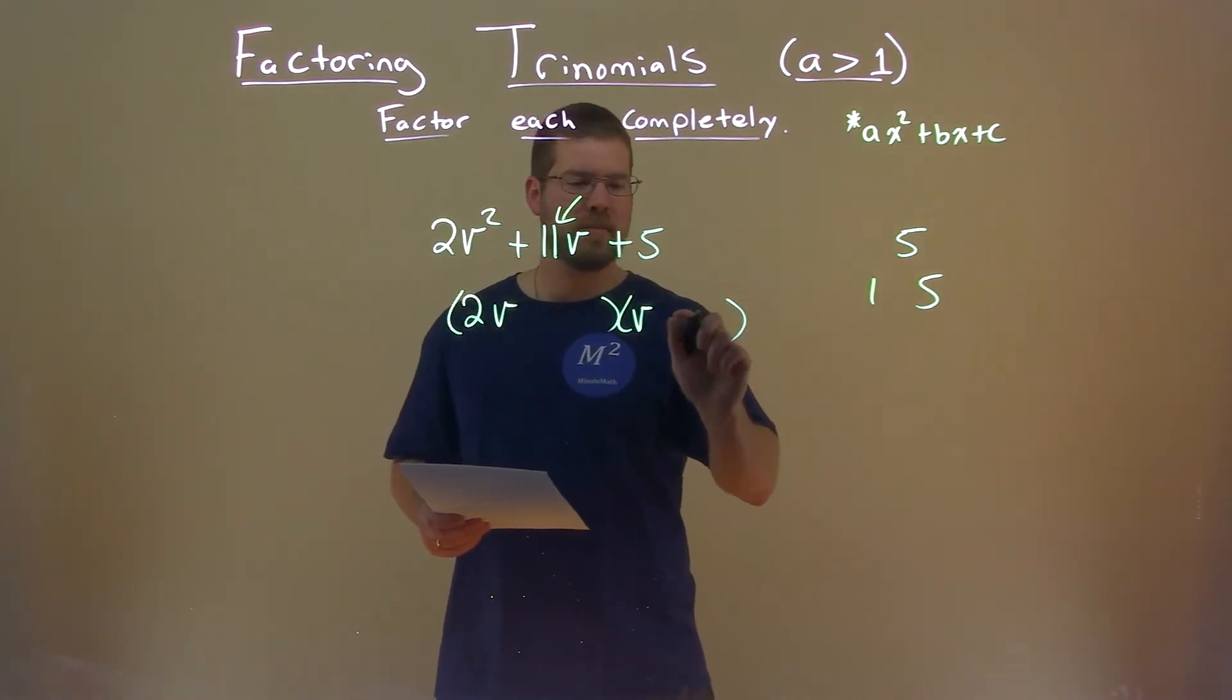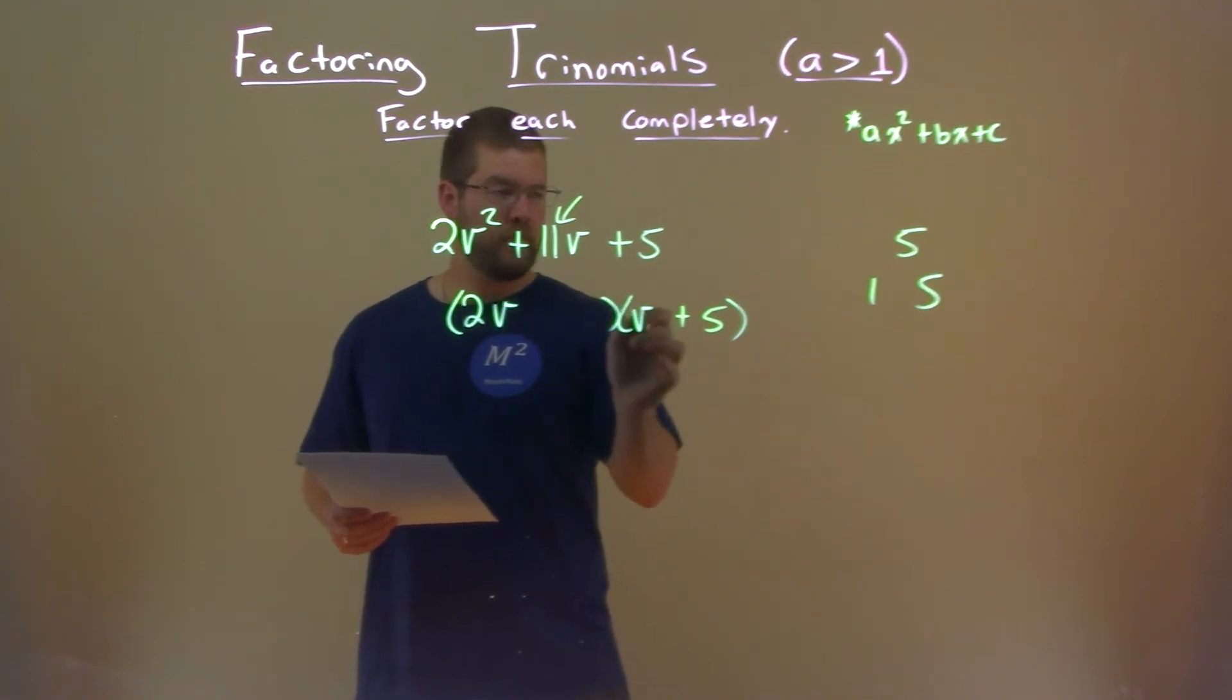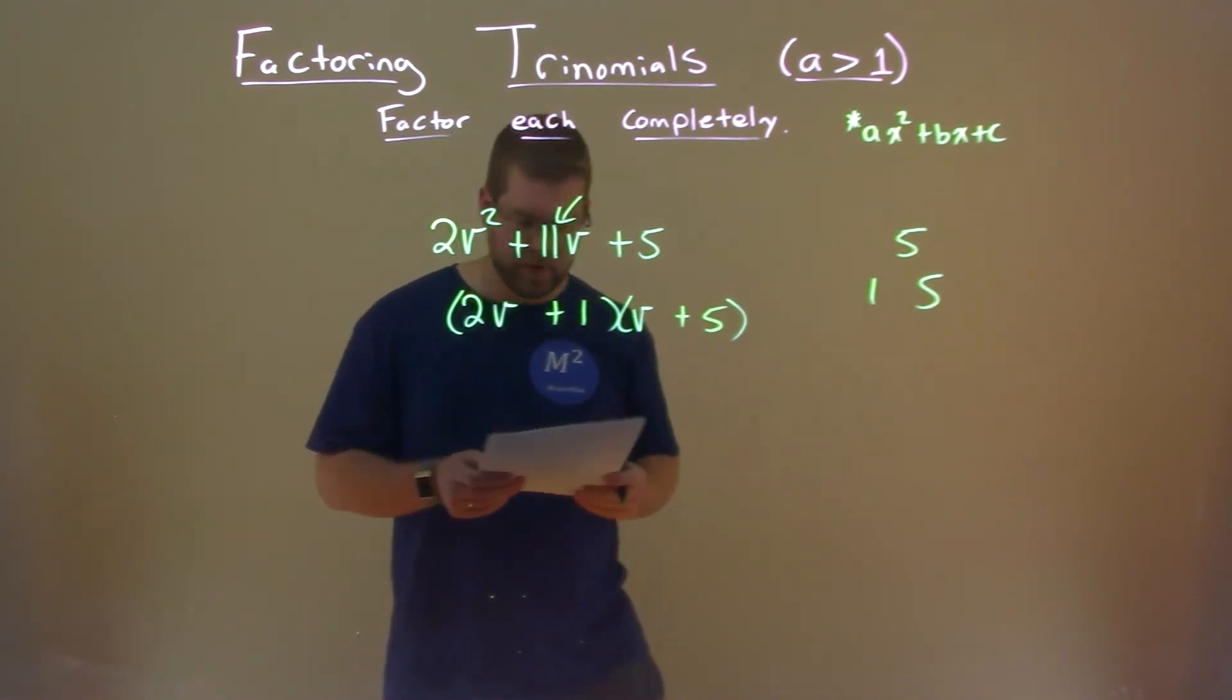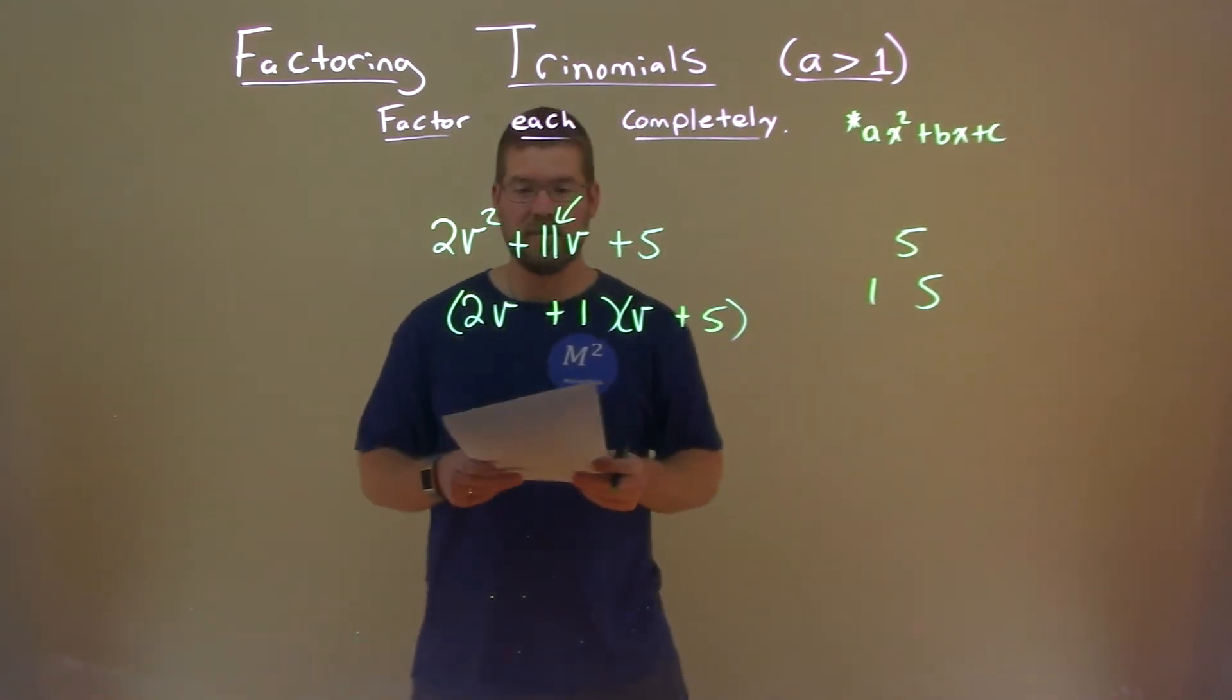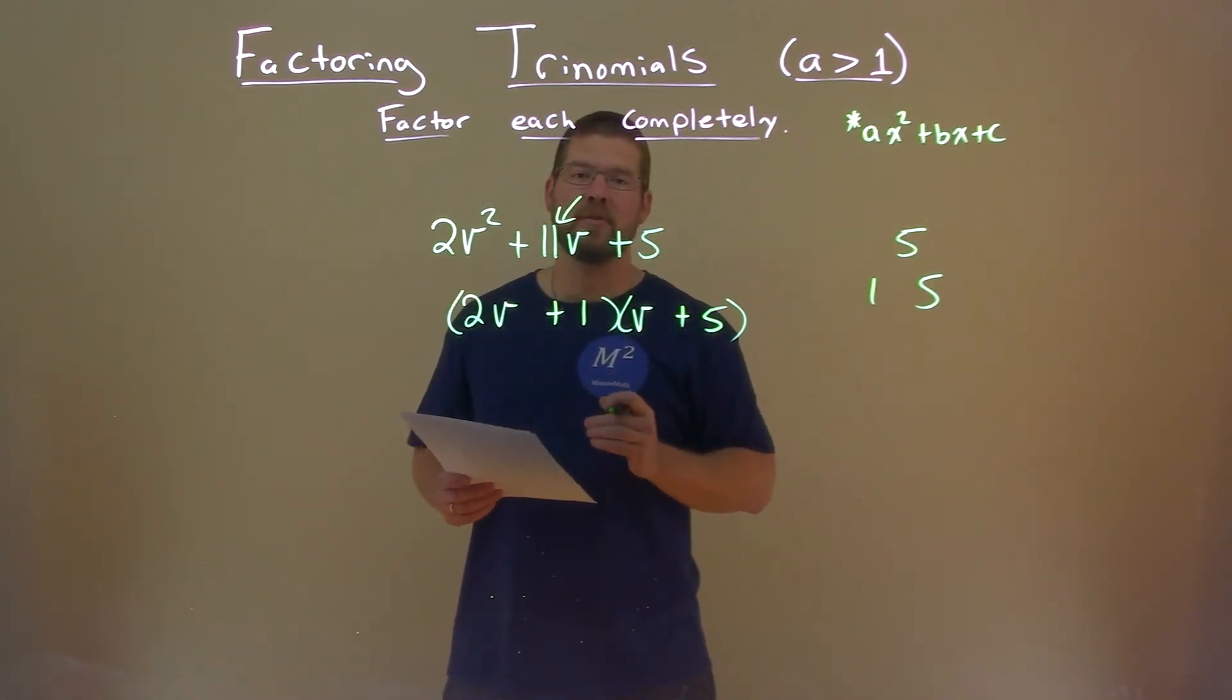So 2 will be multiplied by this number, so we have plus 5 here. And then 1 will be, the v will be multiplied by this 1 right here. And there we have our answer: 2v plus 1 times v plus 5, and that is it in factored form.